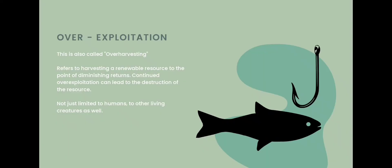Over-exploitation, also called over-harvesting, refers to harvesting renewable resources to the point of diminishing returns. Continued over-exploitation can lead to the destruction of the resource. The over-gathering of natural resources puts many species at risk of extinction. This applies not just to humans but to other living creatures as well.